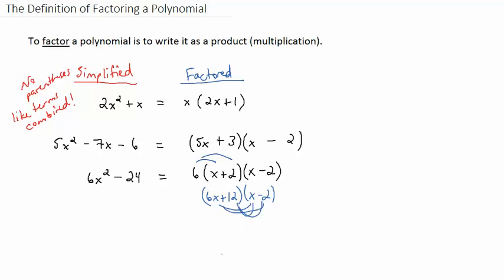That's one way to do it. You could also multiply (x + 2) times (x - 2) first, and then multiply your 6 through it. In either case, you will get 6x² - 24 as your simplified version.